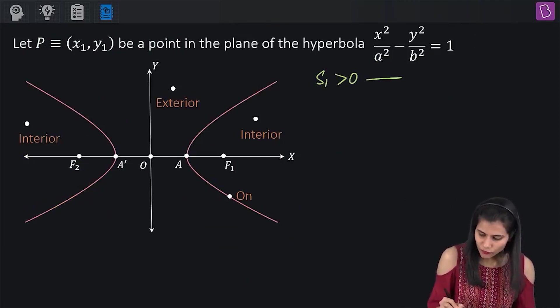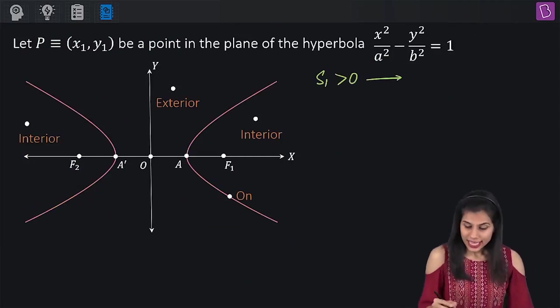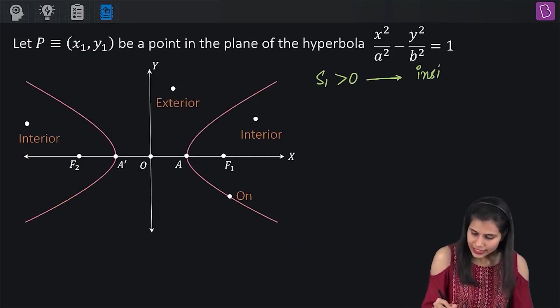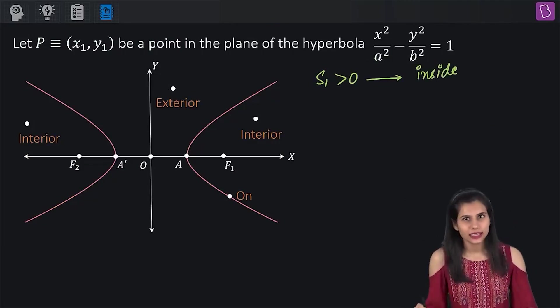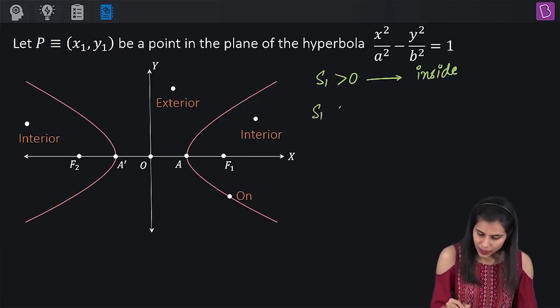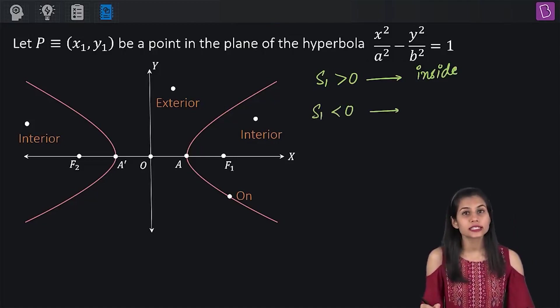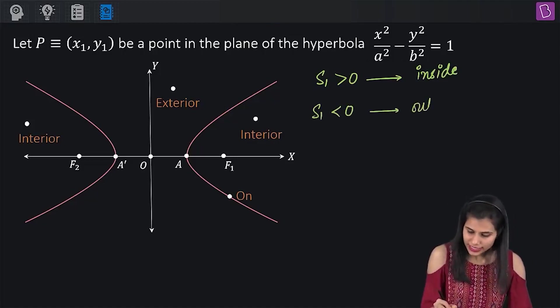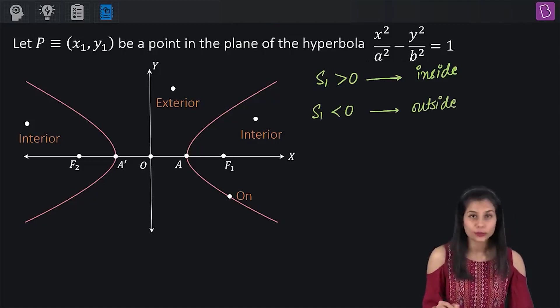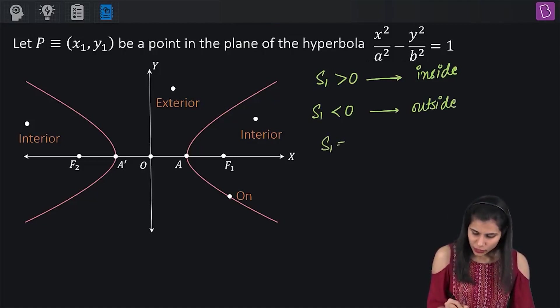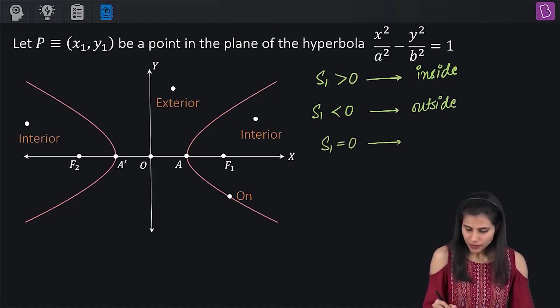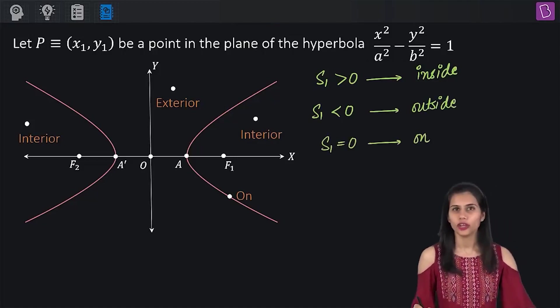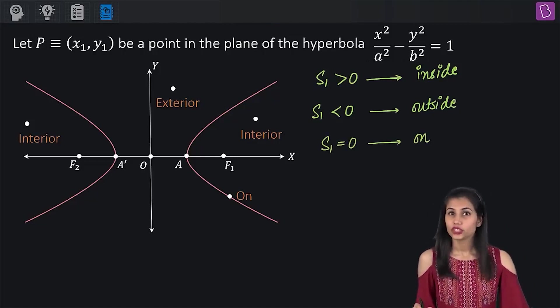What I'm trying to say is, S1 greater than 0 for the first time implies that the point is sitting inside the hyperbola. S1 less than 0 for the first time will imply that the point is sitting outside the hyperbola, whereas S1 equal to 0 obviously will continue to imply that the point is sitting on the hyperbola.